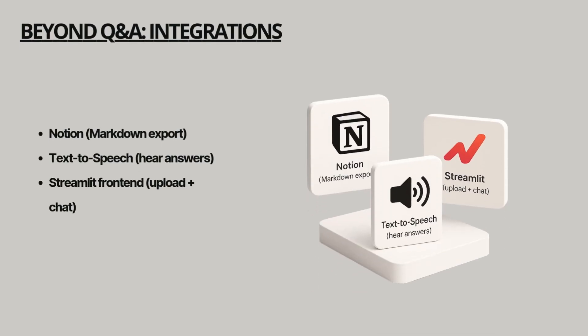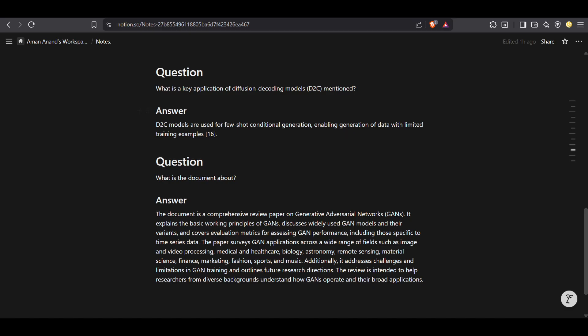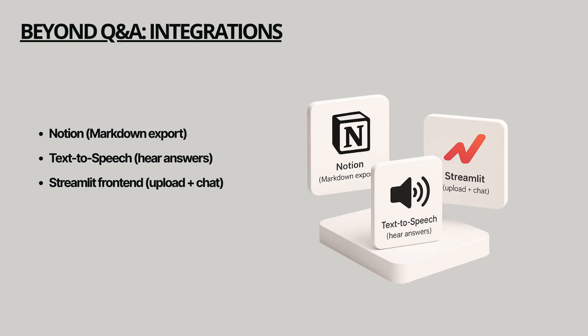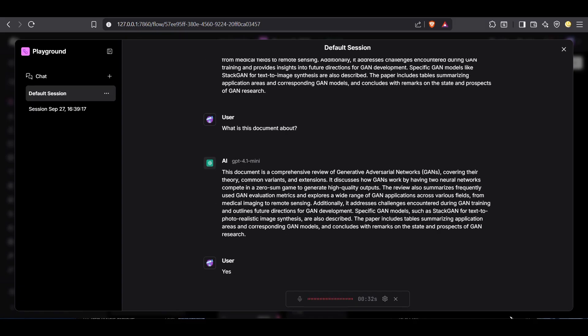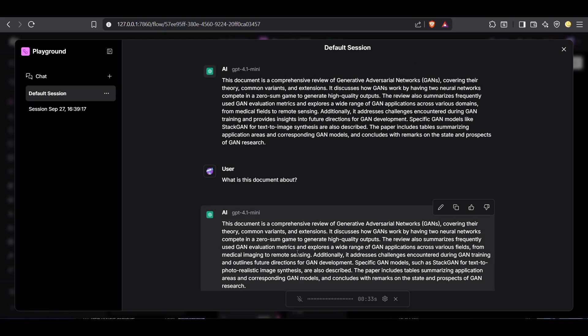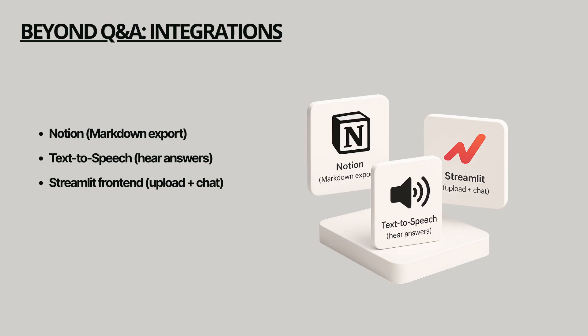I extended the flow with integrations to make it more like a real research companion. First, I integrated with Notion using an API — the answers are automatically converted into markdown text, which Notion renders as clean, well-formatted notes. This means every question I ask is also saved into a permanent research notebook. Second, I added a text-to-speech node so the answers can also be spoken aloud. For example, if I ask 'What is this document about?', the assistant responds: 'This document is a comprehensive review of generative adversarial networks, GANs, covering their theory, common variants, and extensions.' This makes it much easier to review papers on the go.